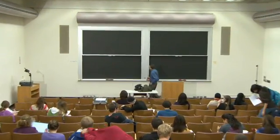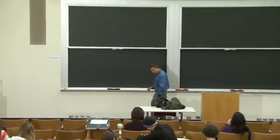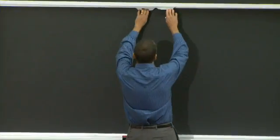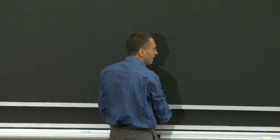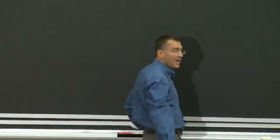Today we are going to finish up our discussion of consumer theory and then move on to producer theory — finishing up what's behind the demand curve and moving on to what's behind the supply curve. But before we do that, I want to talk about an application of why income and substitution effects are important.